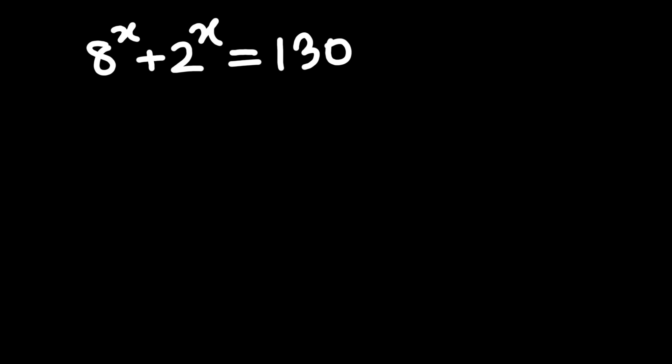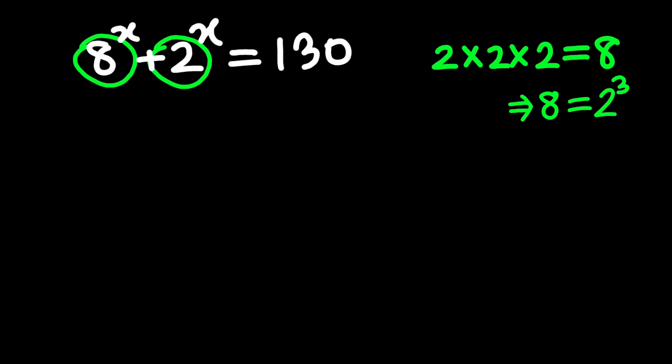Okay, so first thing, whenever I see an 8 and a 2 in the same equation, my brain immediately says same base time. 8 can be rewritten as a power of 2, because 2 times 2 times 2 is 8, which means 8 is 2 cubed. So let's swap that in.